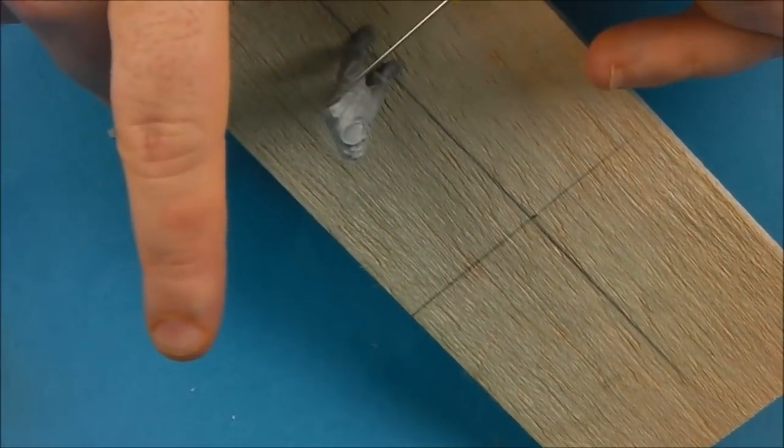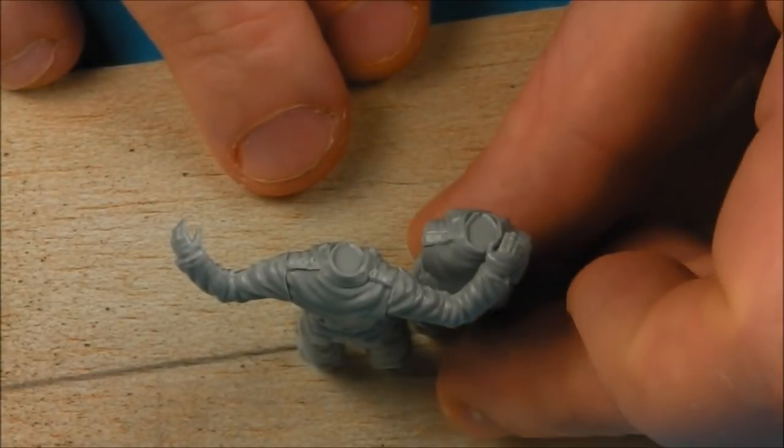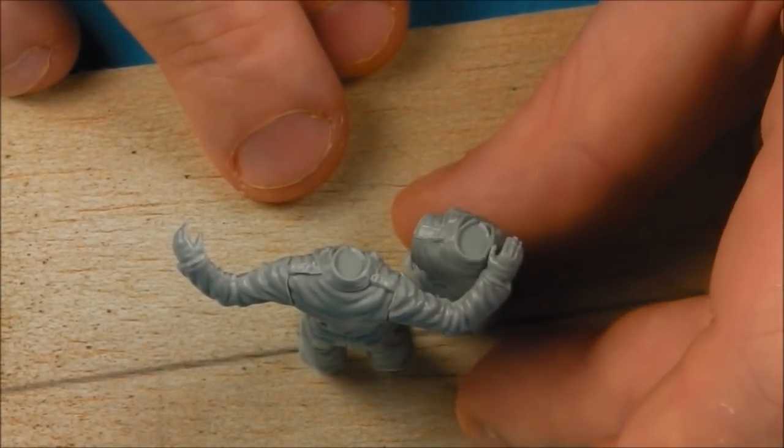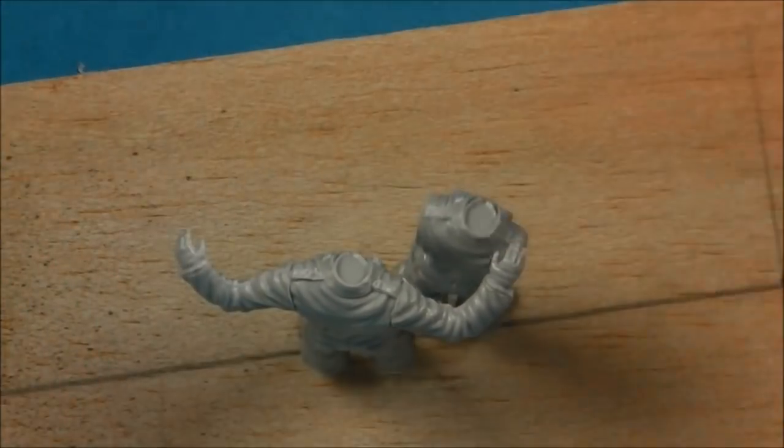I'm going to take the Feldman figure and again use Contacta to glue his arms together. While the glue is still wet, I'm actually going to make adjustments to his arms to ensure that he's realistically wrapping his arms around his crew.